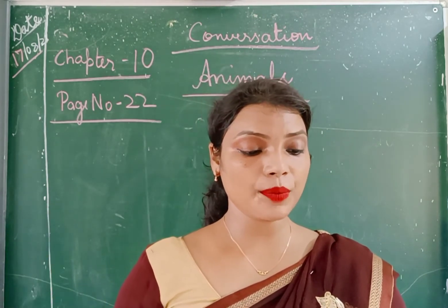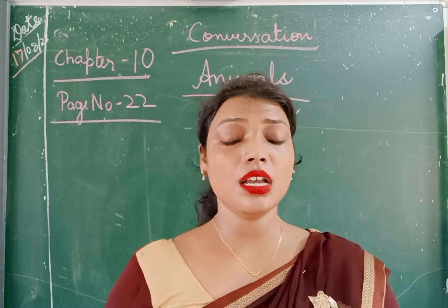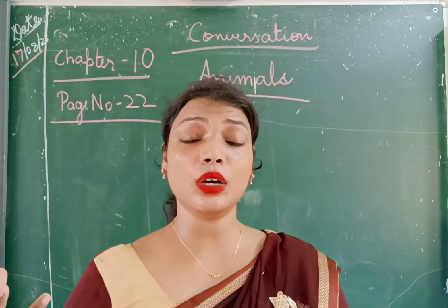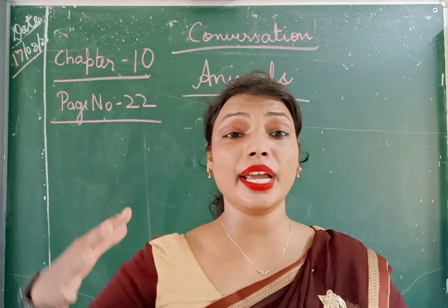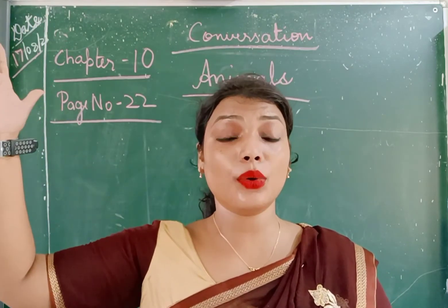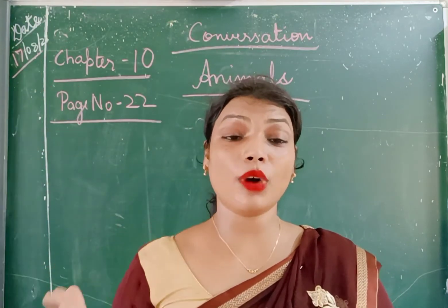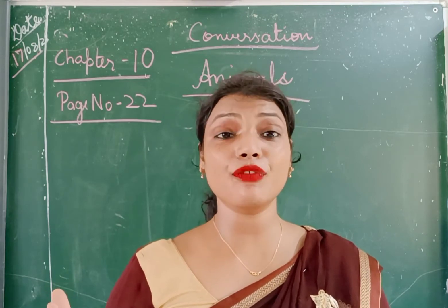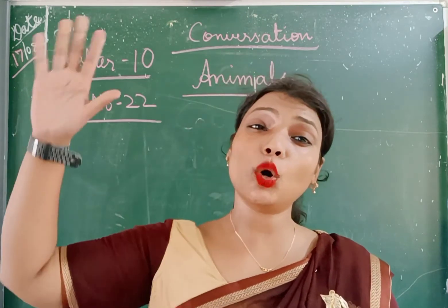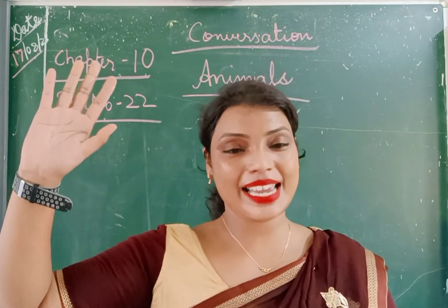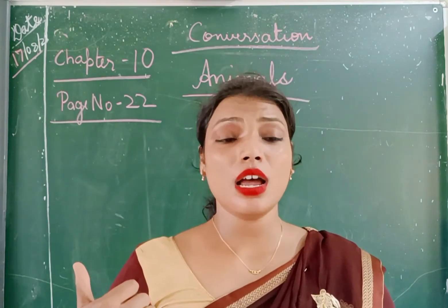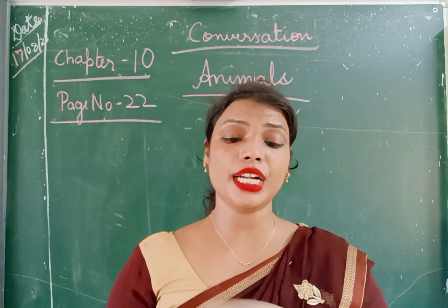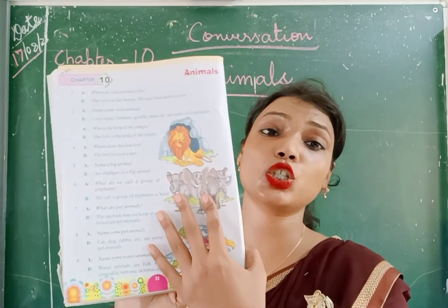Come to the next one. Name a big animal. Sabse bada janwar ka naam batao. What is a big animal — very big, vishal? That is elephant. Yes, you have seen elephant — it's so big. So the very big animal is elephant. We can see it, and a picture is also shown.